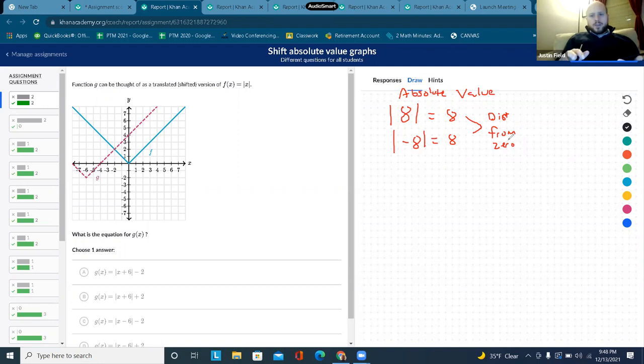Absolute value can be distance of any sort. It doesn't have to just be from 0. For example, if you want to find the distance between 5 and 3, you would subtract 5 minus 3. And you would find out that 5 is 2 away from 3 or 3 is 2 away from 5.